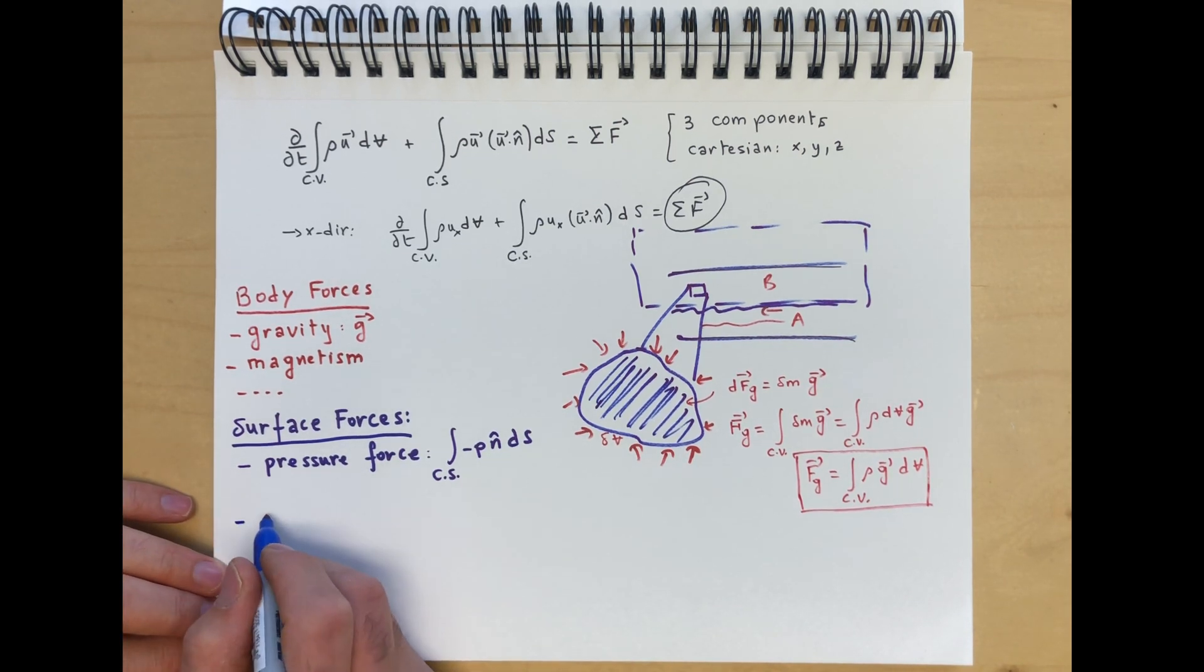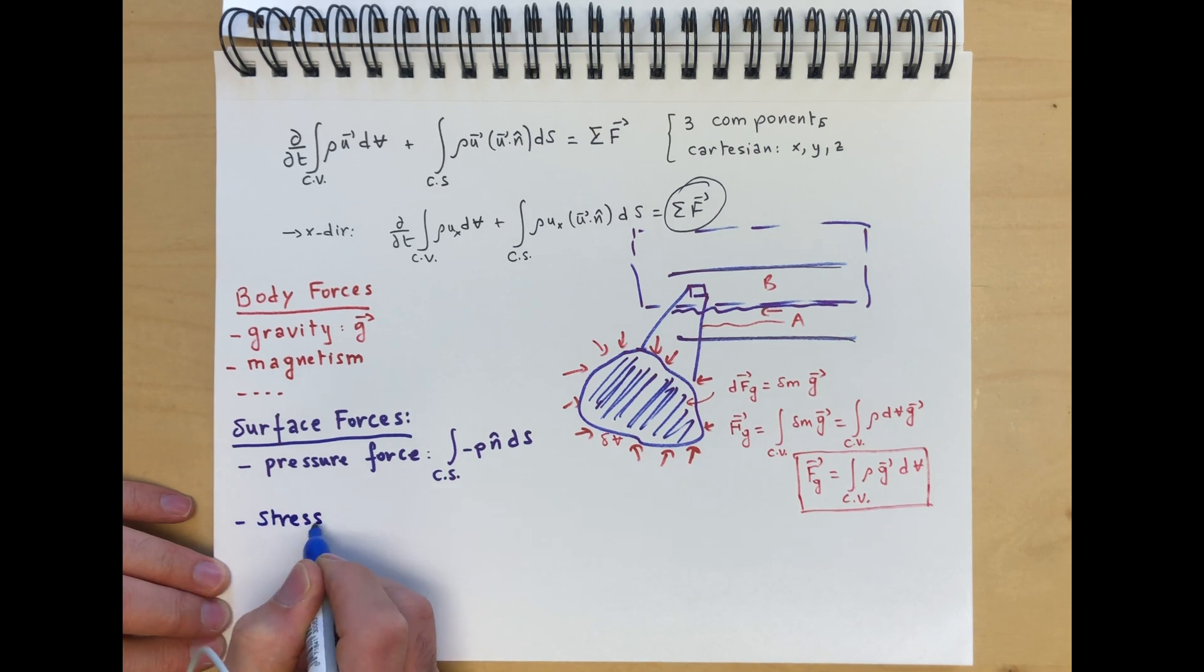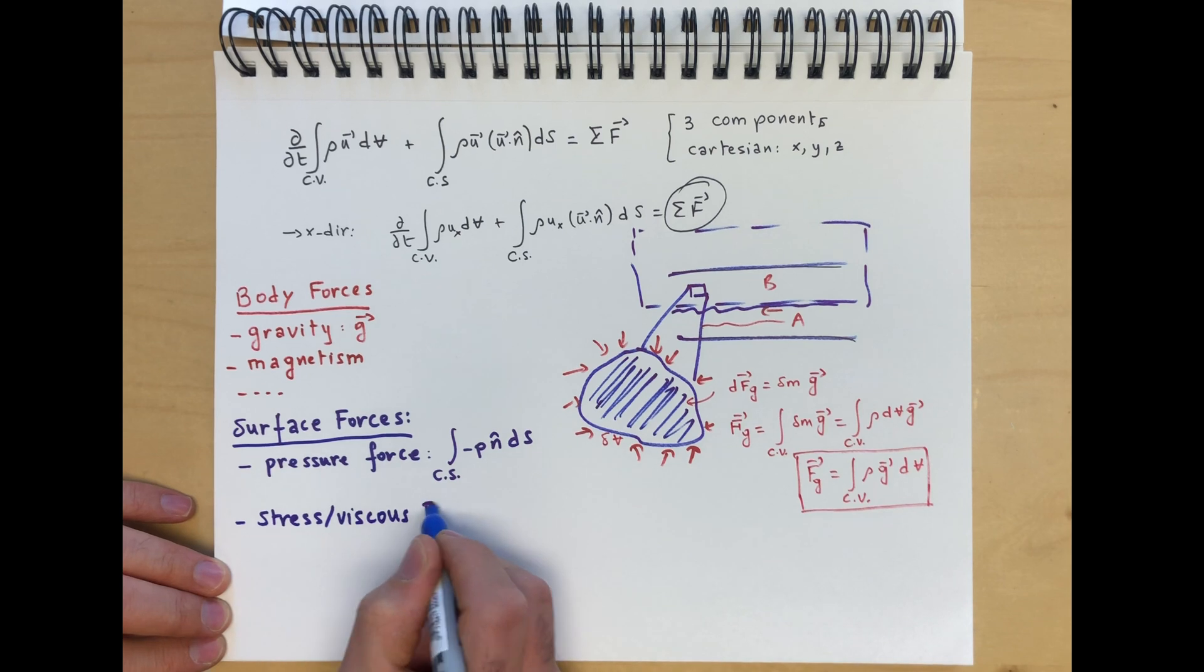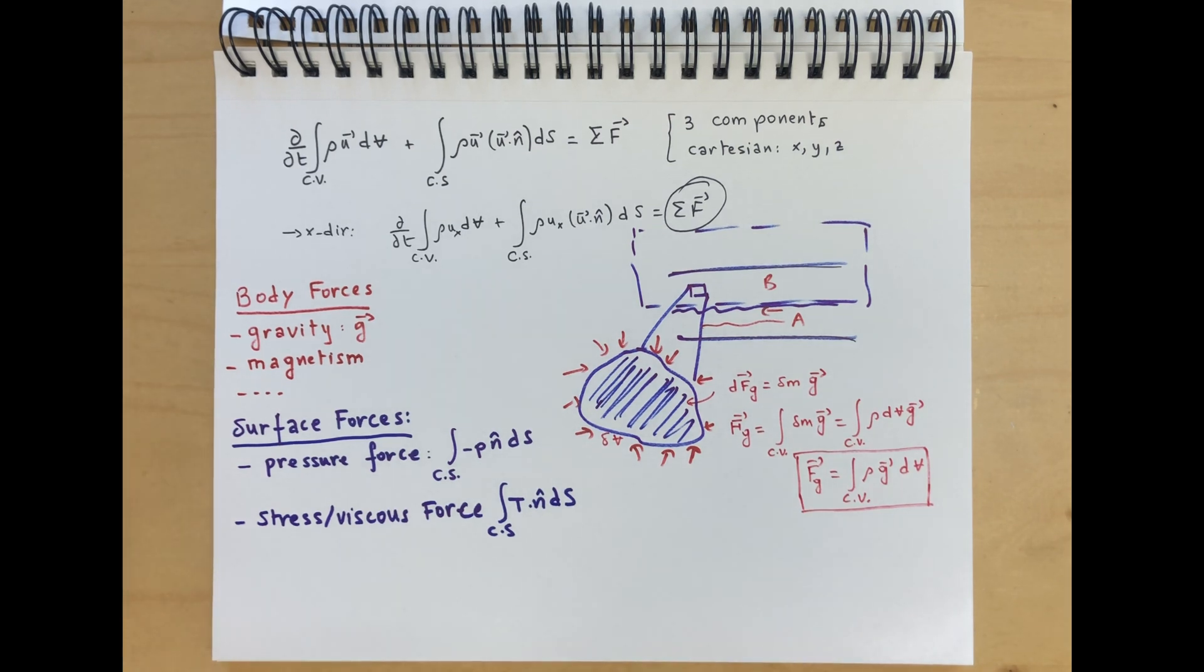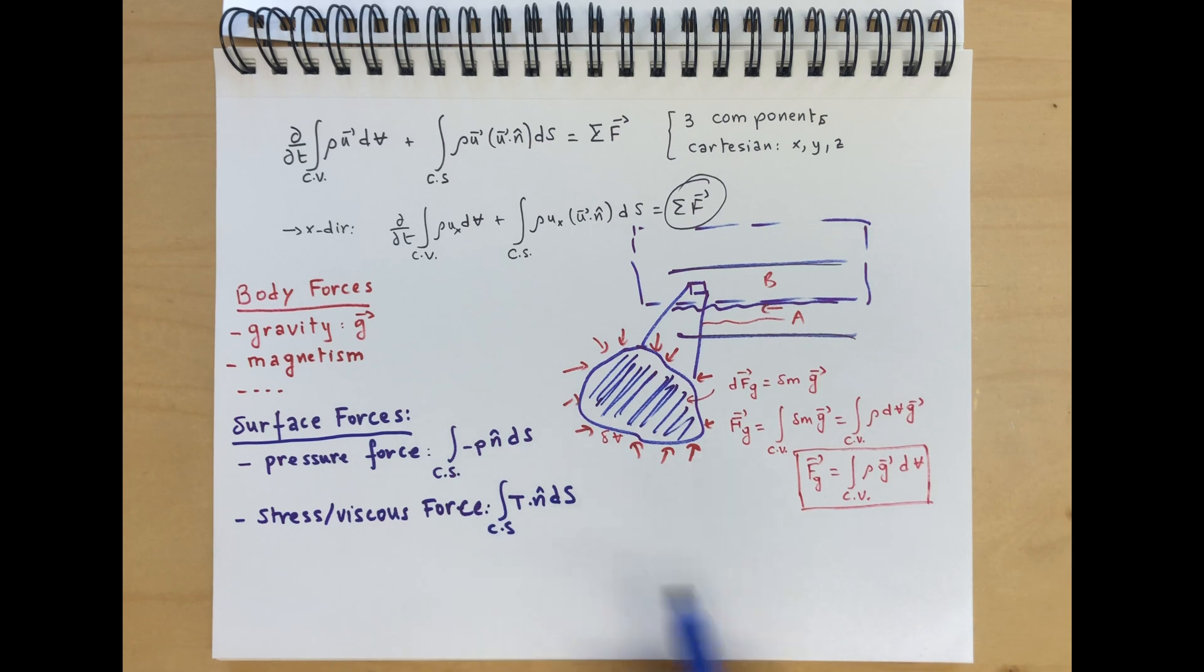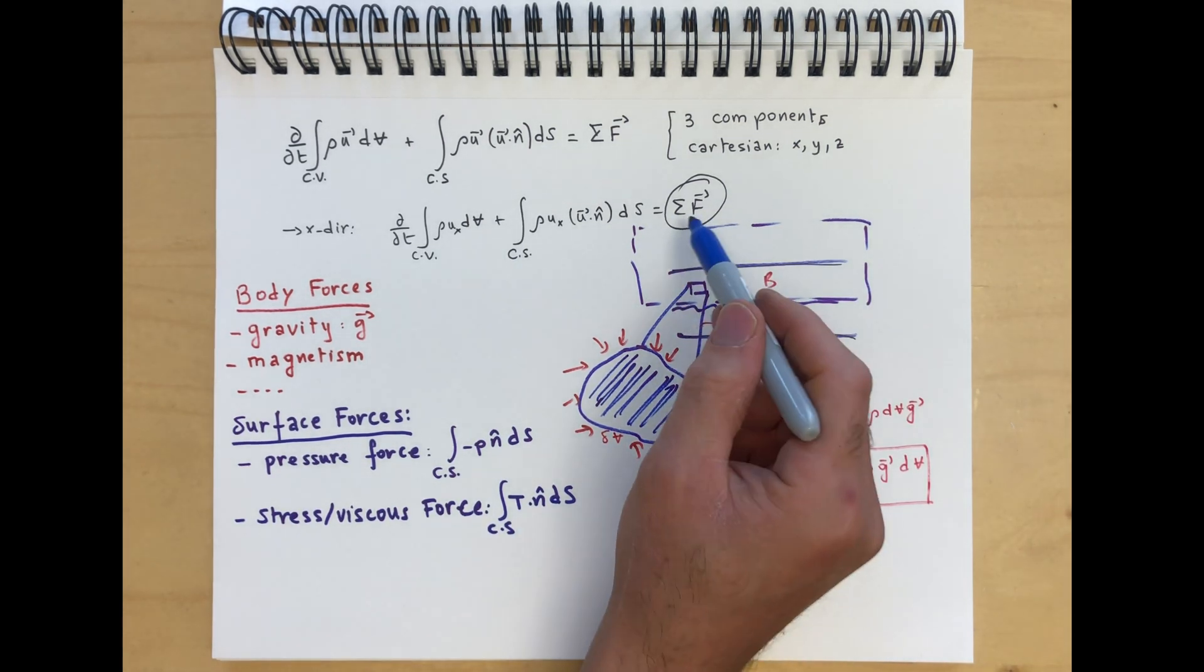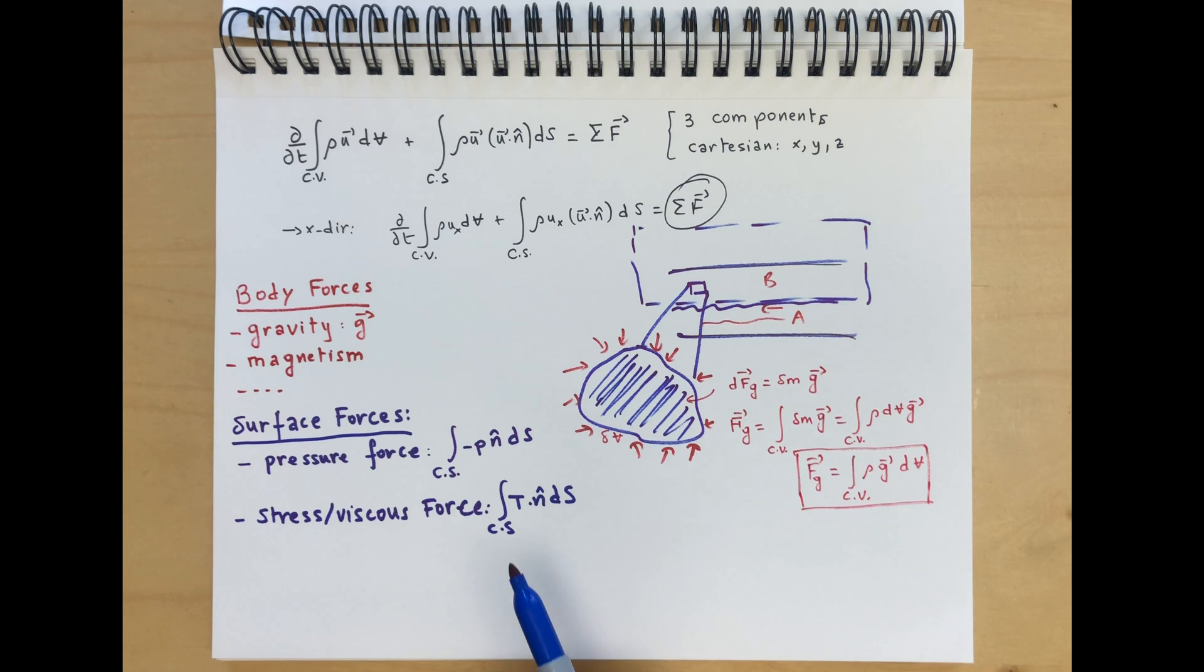Now, the other force is the stress viscous forces, viscous force. And we're not going to talk about this right now. All we're going to say is that this is the surface force. We're going to write it as the integral of some T dot n dS over the control surface. We're not going to worry about that. T is related to the stress tensor. We will discuss this a little bit later. We just want to get to the general form of this summation of forces, external forces.